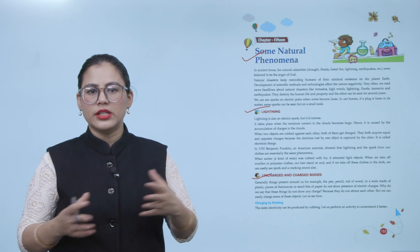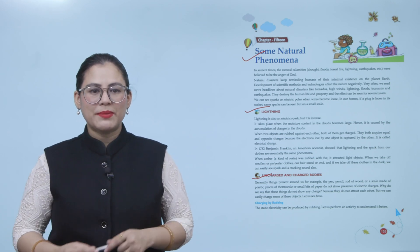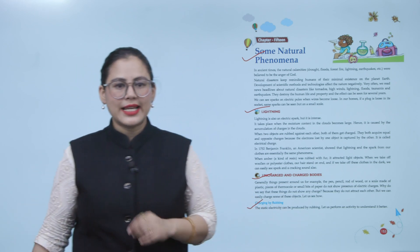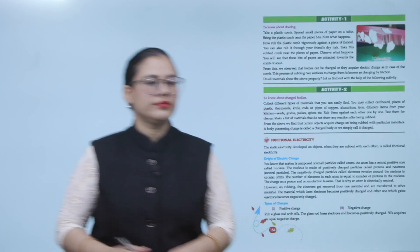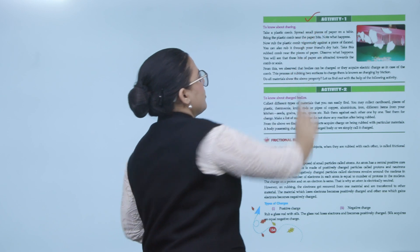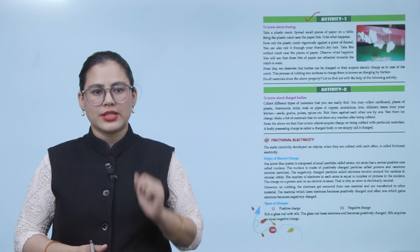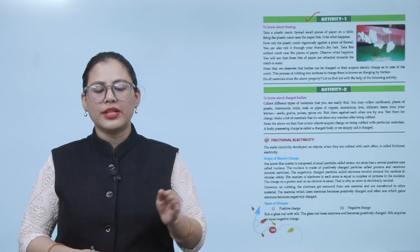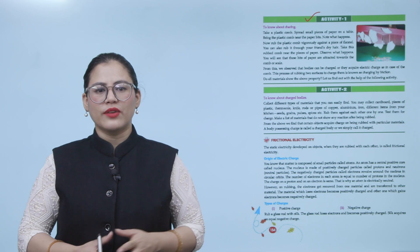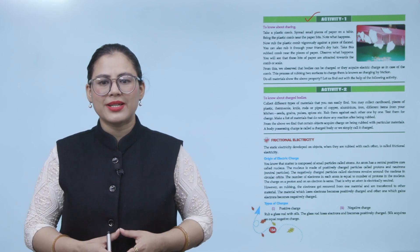Kuch hamare aas-paas cheezein hain jo electrically charged nahi hoti hain, but hum inhe charge kar sakte hain. Charging by rubbing: static electricity can be produced by rubbing. Activity 1 — to know about charging: take a plastic comb and spread small pieces of paper on a table. Bring the plastic comb near the paper bits and note what happens. Now rub the plastic comb vigorously against a piece of flannel or through your friend's dry hair. Bring this rubbed comb near the pieces of paper — you will see that the bits of paper are attracted towards the comb.